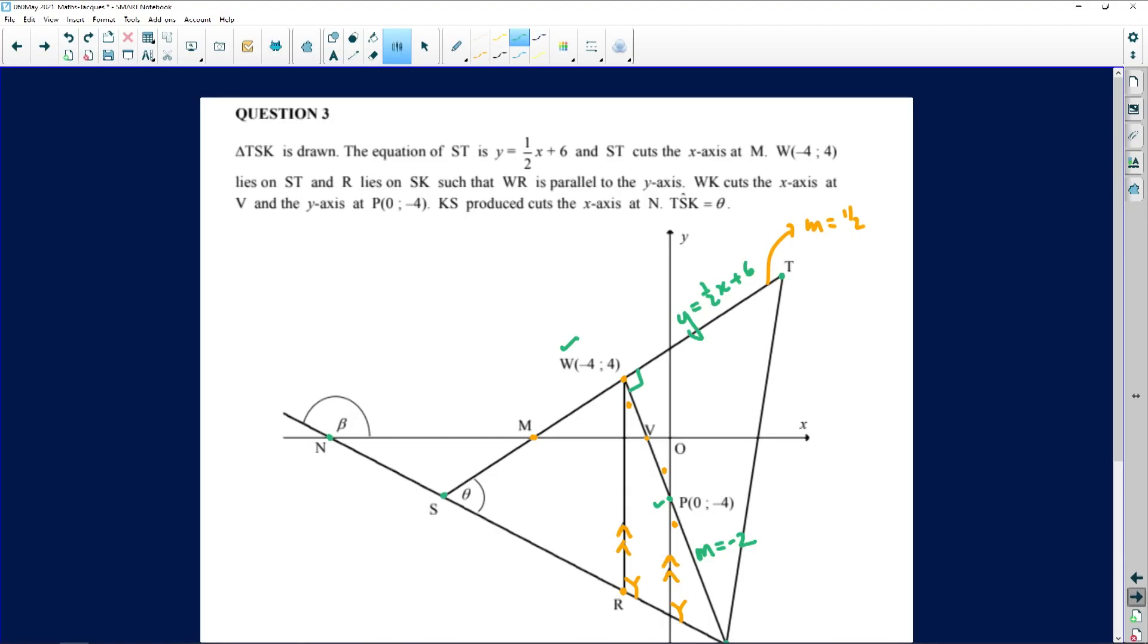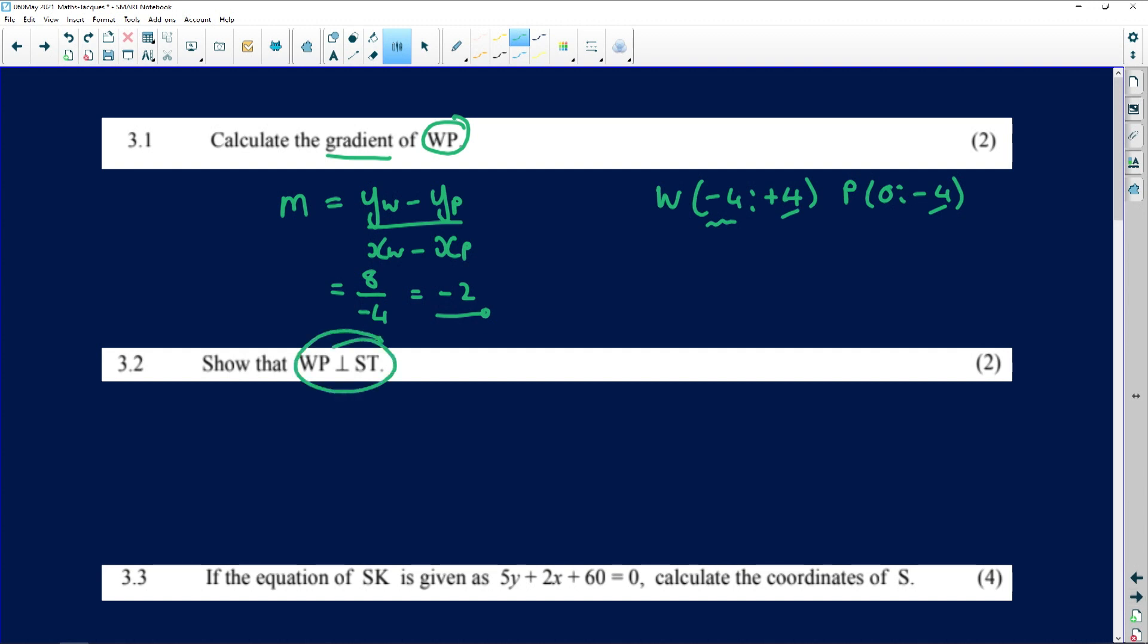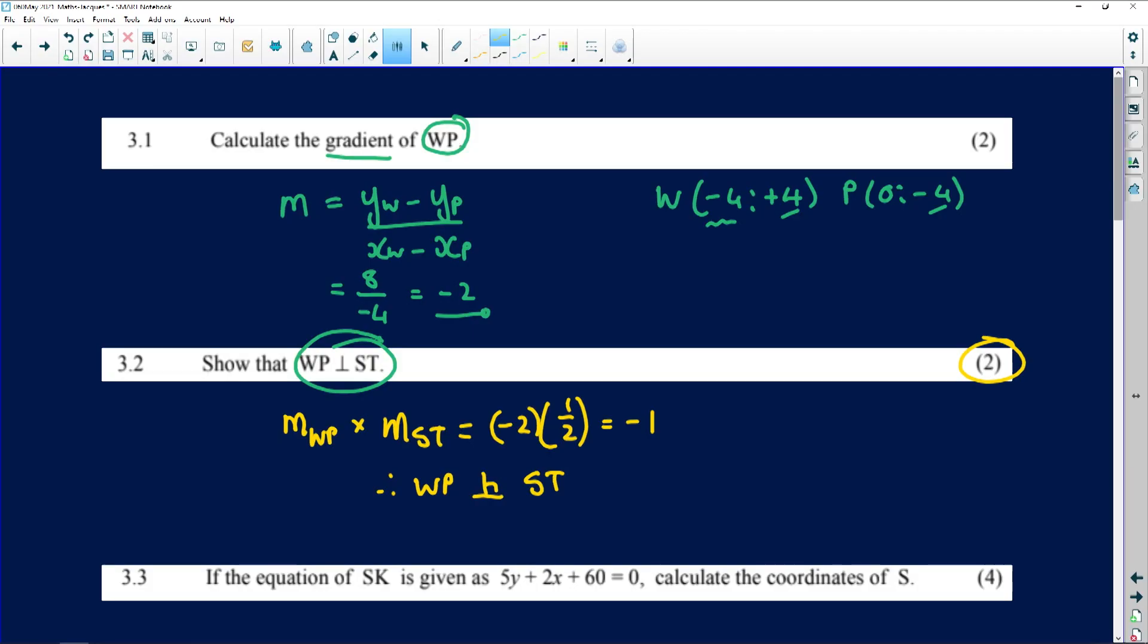Let us see the next question. Look at what they're asking us, they're asking us to show that those two are perpendicular and it's for two marks. So we're just going to argue the gradient of WP multiplied by the gradient of ST is equal to minus 2 times a half, which is minus 1. Therefore WP is indeed perpendicular to ST. That's for two marks, it's quick. Don't make a silly mistake like I thought I did when I worked out that gradient. Make sure, because this work is so easy folks, you can make silly errors. Don't fall into traps.